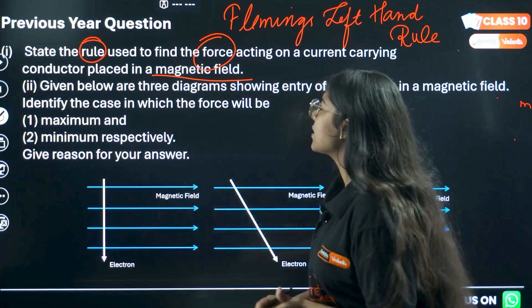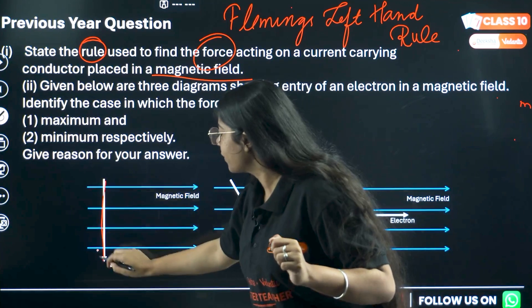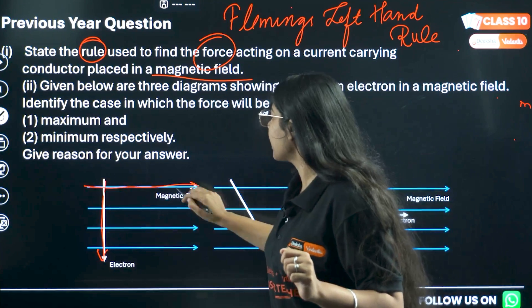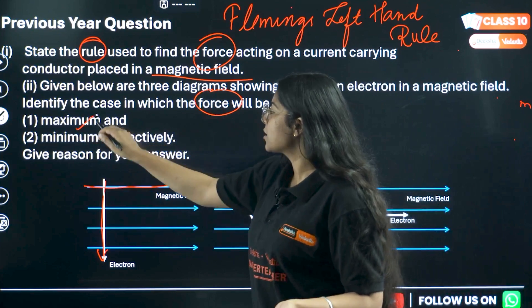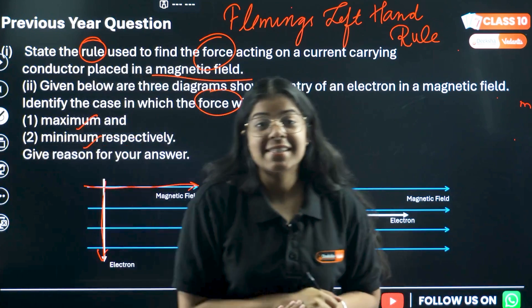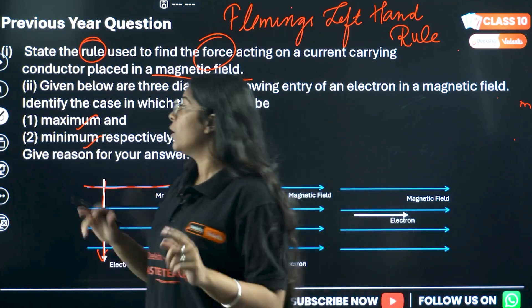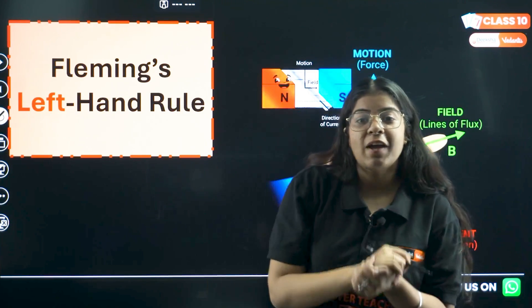The next part says given below are three diagrams showing the entry of an electron in a magnetic field. This is our magnetic field. Identify the case in which the force will be maximum, minimum and yada yada. Give the reason for your answer. Let's see the concept first. We'll also look at the concept. So the concept is Fleming's left hand rule.